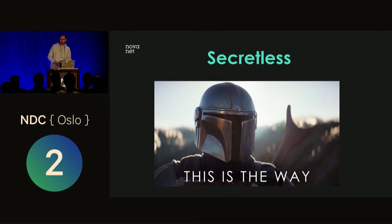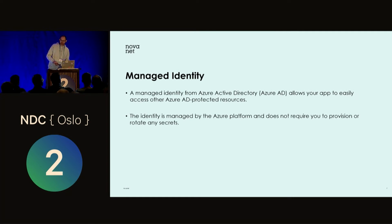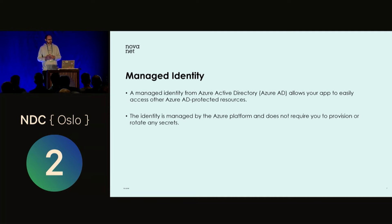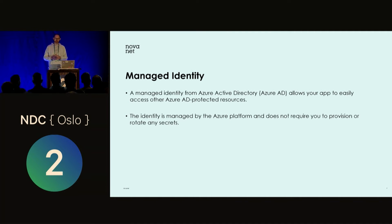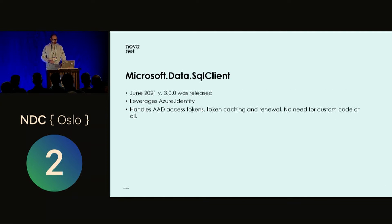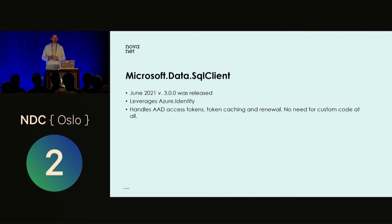Wouldn't it be better to have no secrets at all? I firmly believe that secretless is the way to go. Achieving this in Azure, you can use a mechanism called managed identity. Managed identity allows your app to easily access other Azure AD-protected resources like Azure SQL Server and Azure Key Vault — and the list keeps growing. The identity is managed, meaning you don't have to rotate secrets. Last June, Microsoft.Data.SqlClient package version 3.0.0 was released, and it leverages Azure Identity and handles everything regarding Azure Active Directory tokens.